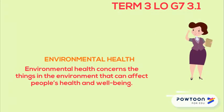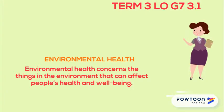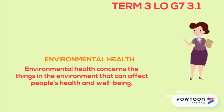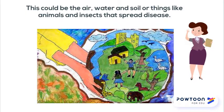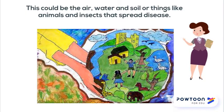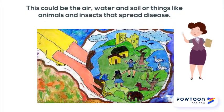Good day wizards and welcome to your third lesson in life orientation. Today's lesson title is Environmental Health. Environmental health concerns the things in the environment that can affect people's health and well-being. This could be the air, water and soil, or things like animals and insects that spread disease. It is our duty as human beings to care for the environment and all the inhabitants within it.